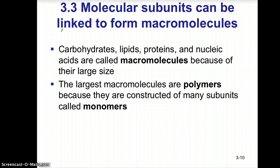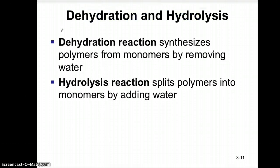How do these macromolecules or polymers form? They form through a reaction called dehydration synthesis. A dehydration synthesis reaction is when you synthesize a polymer by joining monomers together, but in order for these monomers to join together you need to remove a water molecule.